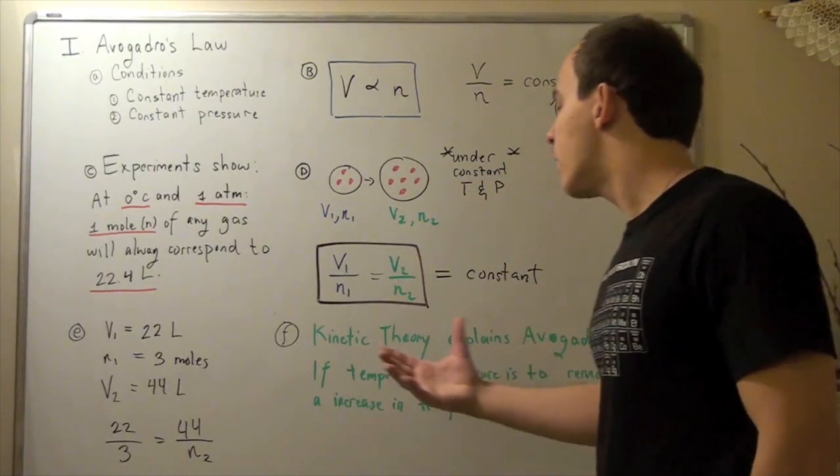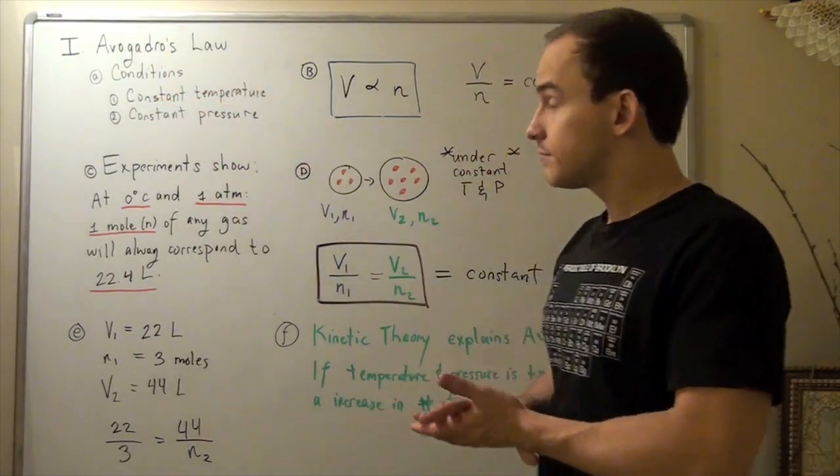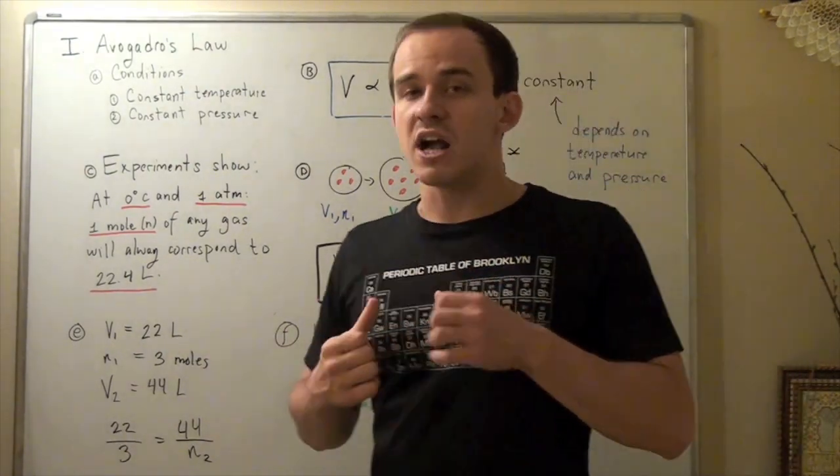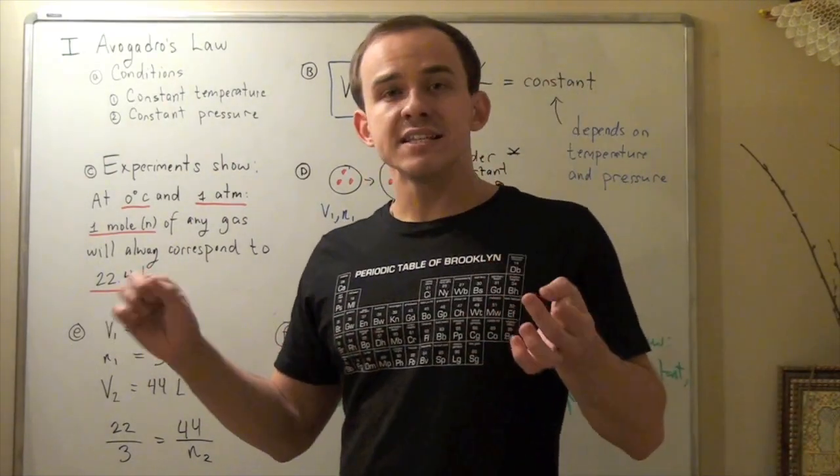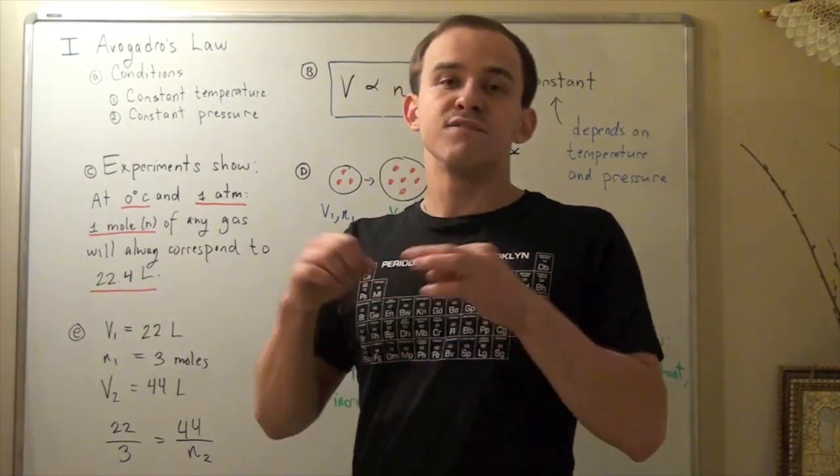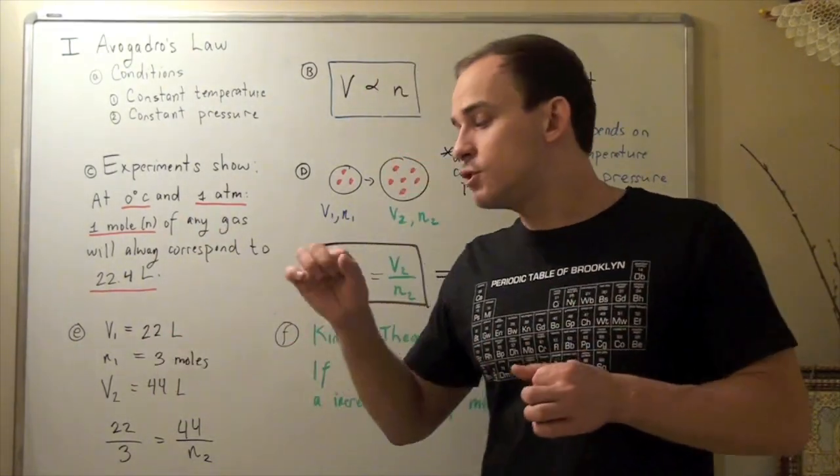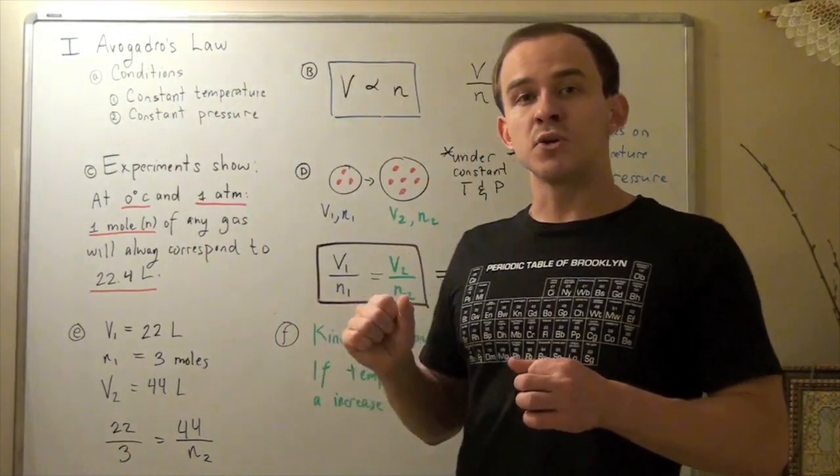That's exactly how our kinetic theory explains Avogadro's law. Now once again to recap, kinetic theory explains microscopic concepts. It explains how two individual gas molecules interact. The fact that their volume is so small that it's assumed to be zero. The fact that individual molecules travel at very high speeds, about a thousand miles per hour.